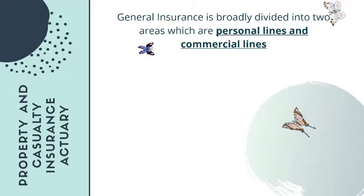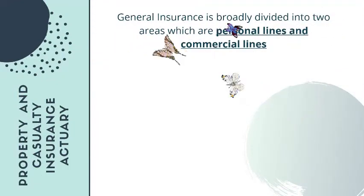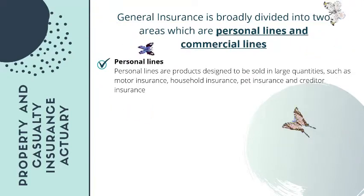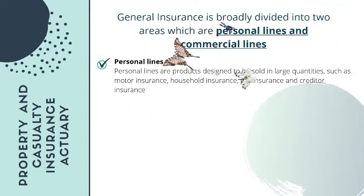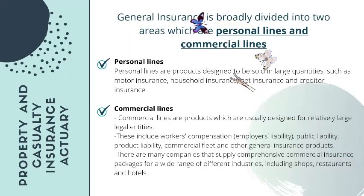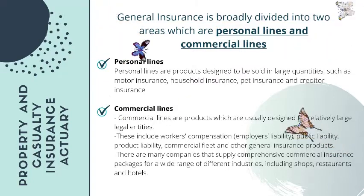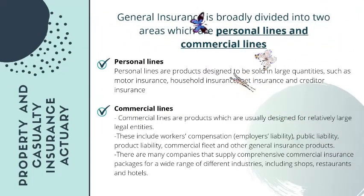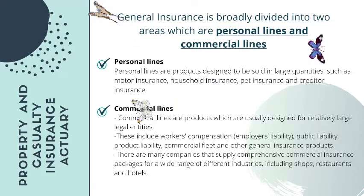General insurance is broadly divided into two areas: personal lines and commercial lines. Personal lines are products designed to be sold in large quantities, such as motor insurance, household insurance, pet insurance, and creditor insurance. Commercial lines are products usually designed for relatively large legal entities, and these include workers' compensation, employers' liability, public liability, product liability, commercial fleet, and other general insurance products.